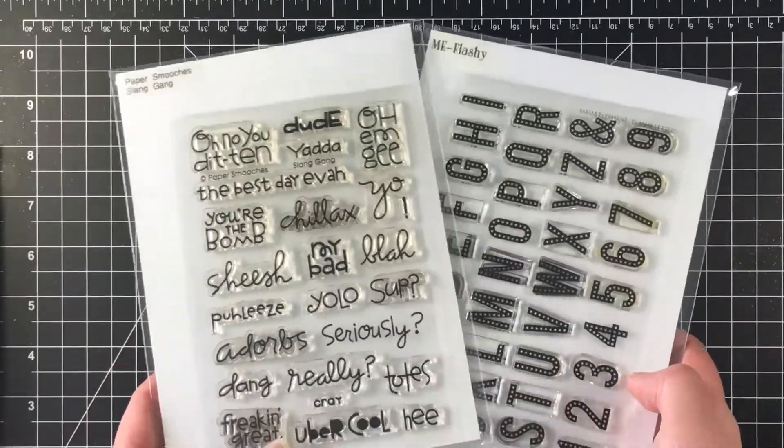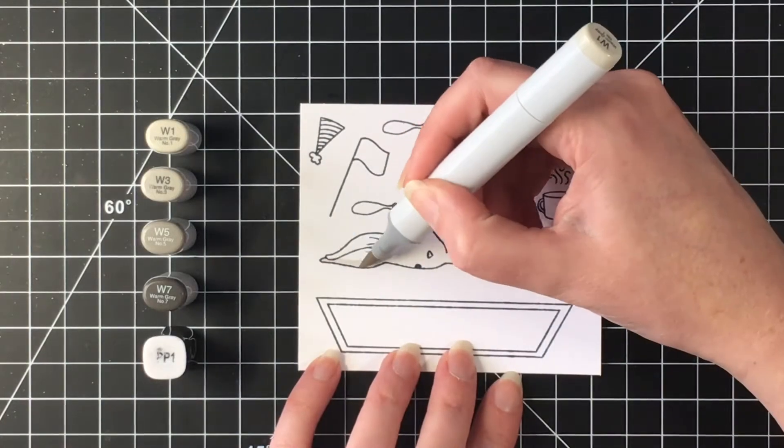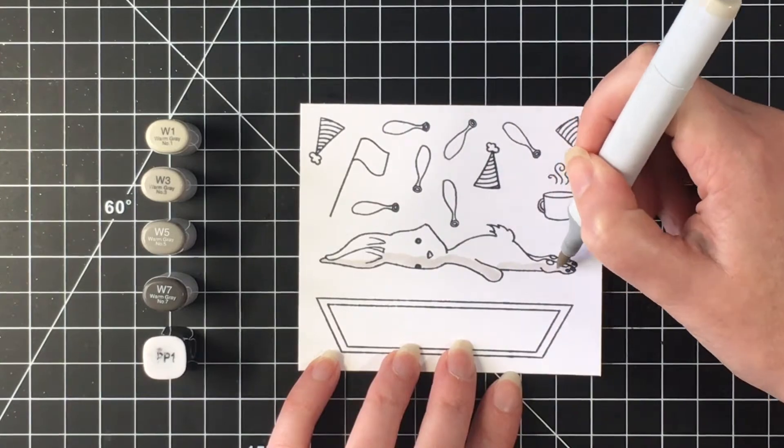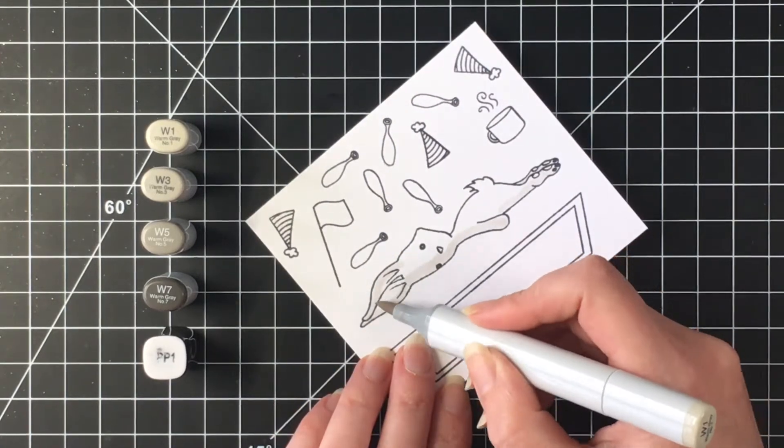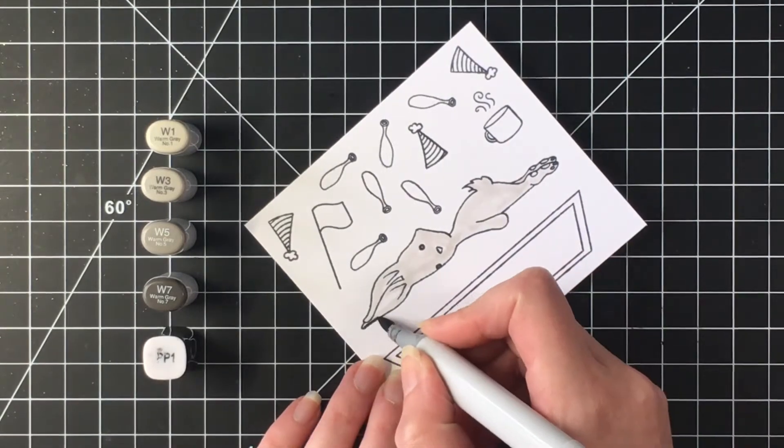I'm also using Mama Elephant Slashy Letters and a sentiment from the Paper Smooches Slang Gang, as well as some paper from an old Dear Lizzie collection. This one is Fine and Dandy.